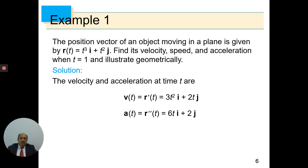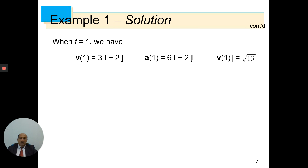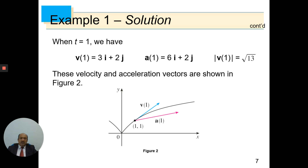By differentiating v(t), we obtain the acceleration at time t. So 3t² becomes 6t, and 2t becomes 2. The speed is |v(t)|, so we find the square root of the first component squared plus the second component squared, which gives √(9t⁴ + 4t²). Substituting t = 1, we obtain v(1) = 3i + 2j, a(1) = 6i + 2j, and |v(1)| = √13.